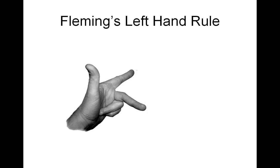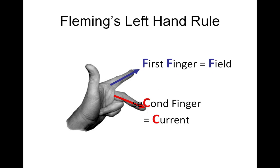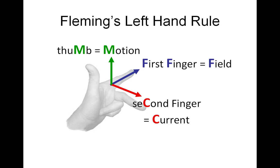Our thumb, first finger, and middle finger are all at right angles. First finger is the field, second finger is the direction of the current, and the thumb is the direction of motion of the conductor. As you can see, all at right angles to each other, like an X, Y, Z graph.